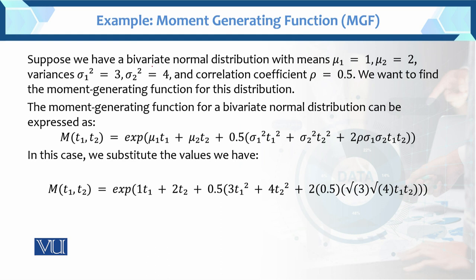Suppose we have a bivariate normal distribution with means μ1 and μ2, variances σ1² = 3 and σ2² = 4, and correlation coefficient ρ = 0.5. We want to find the moment generating function for this distribution and determine values from it according to the bivariate normal distribution.